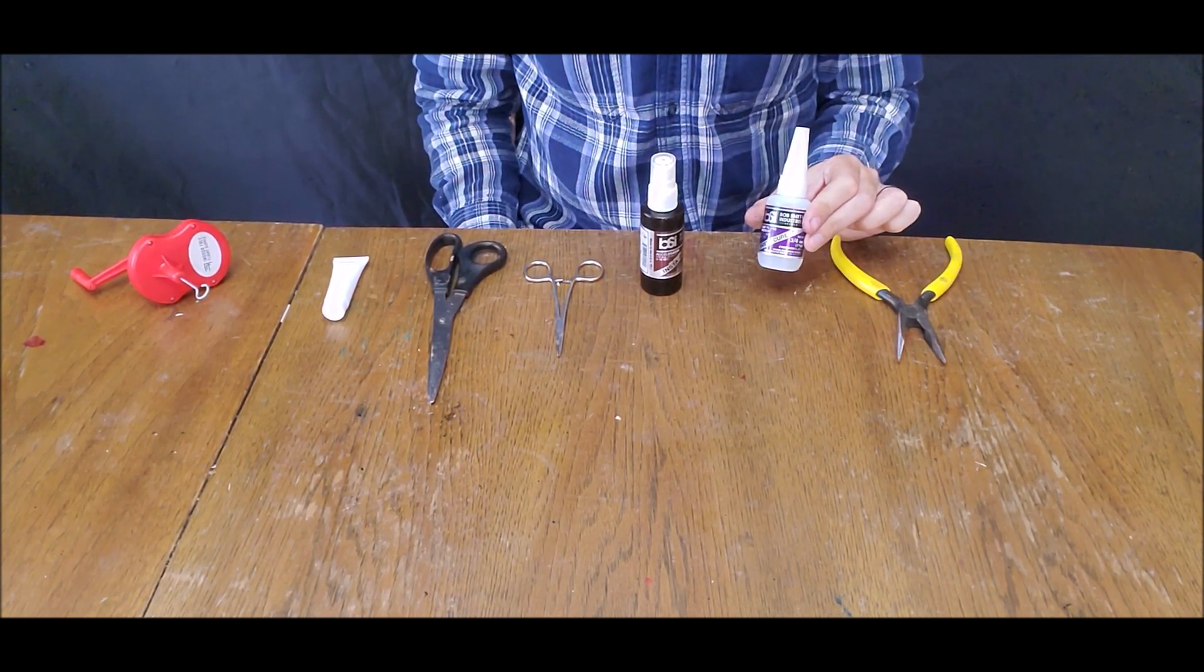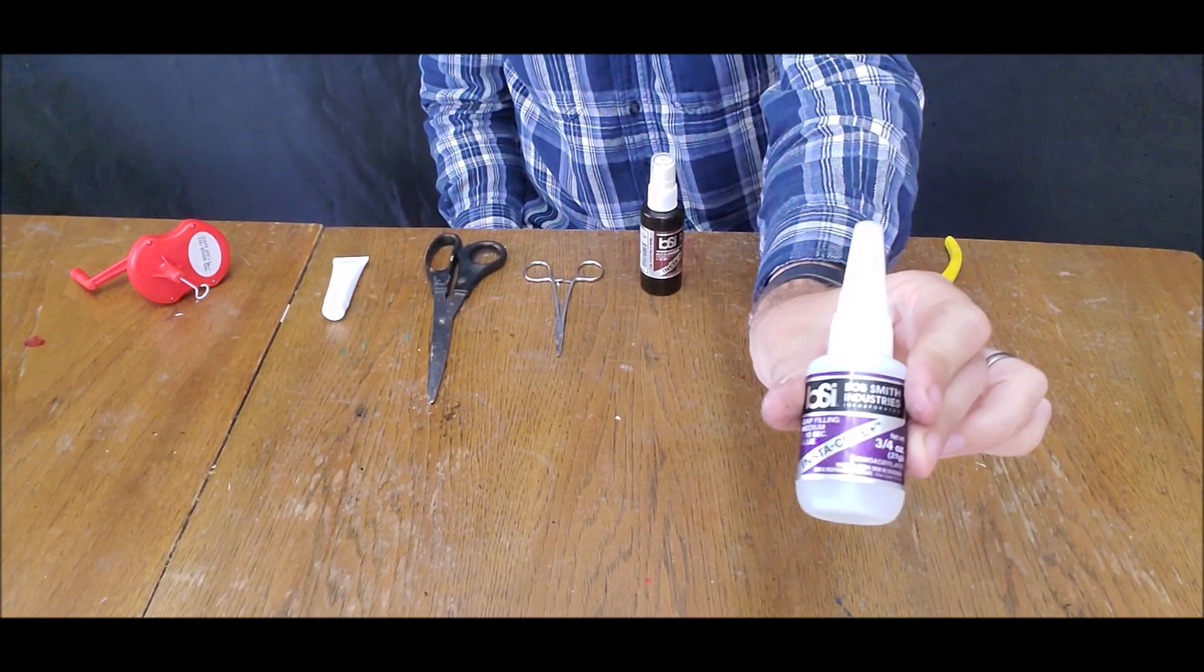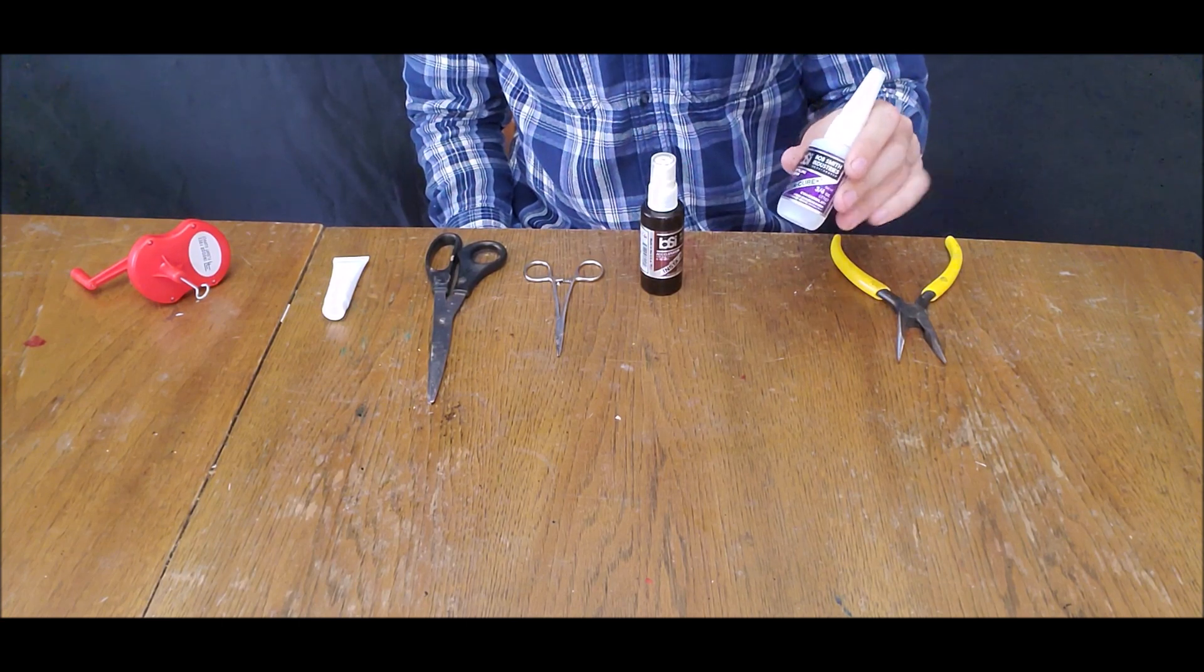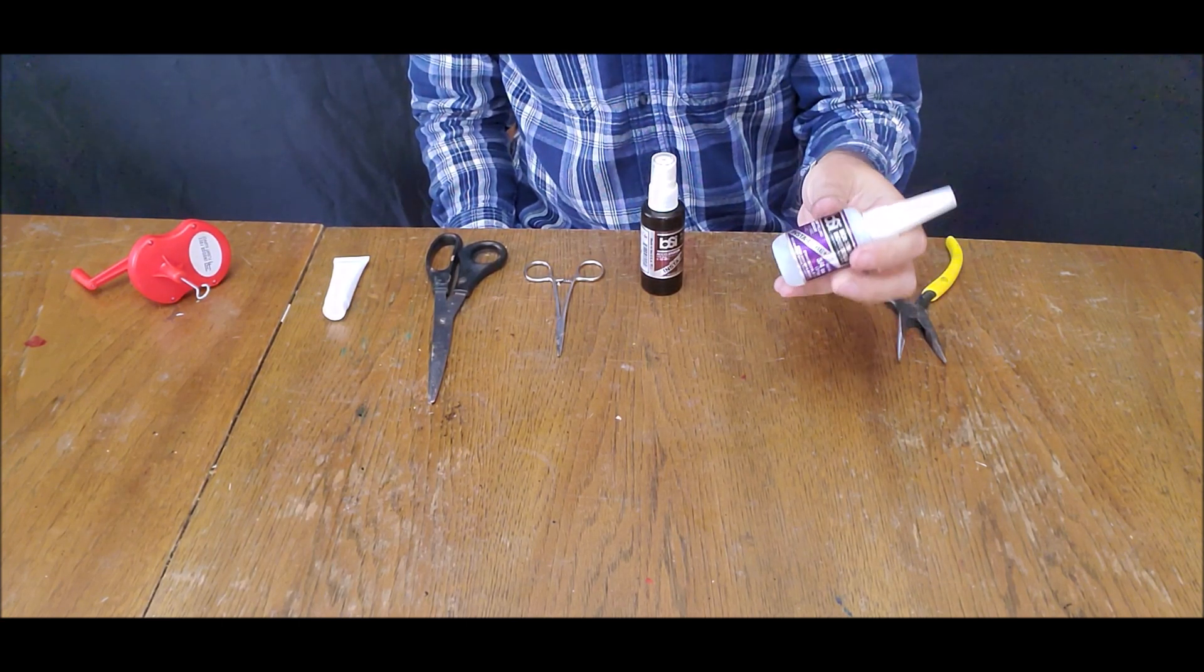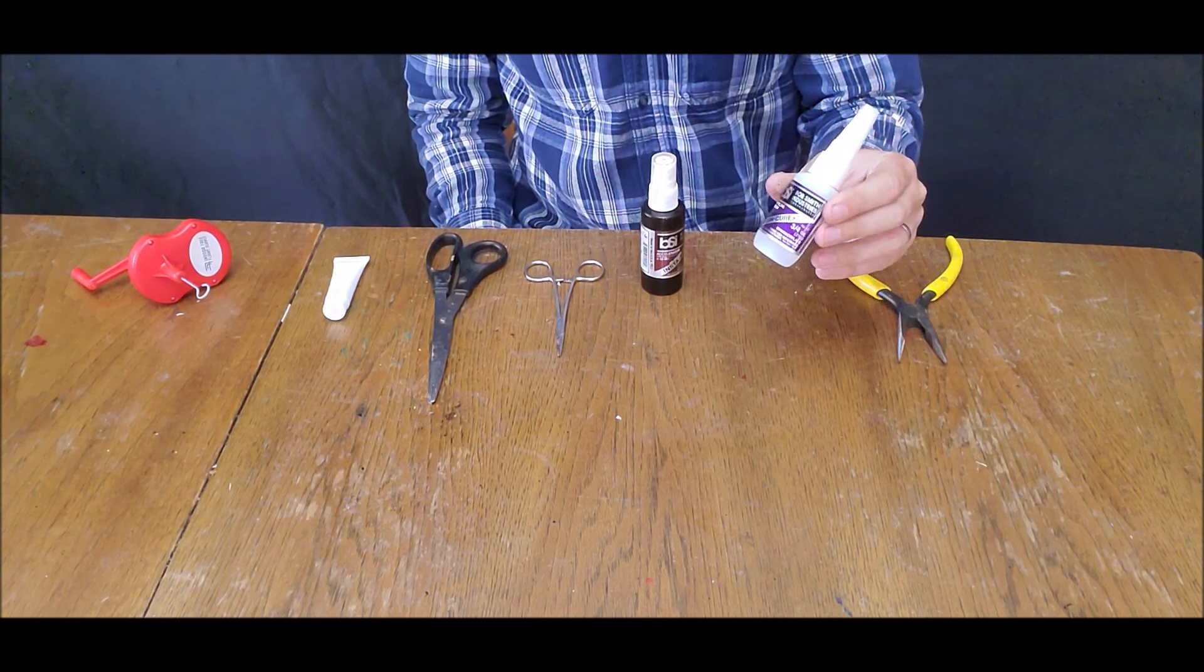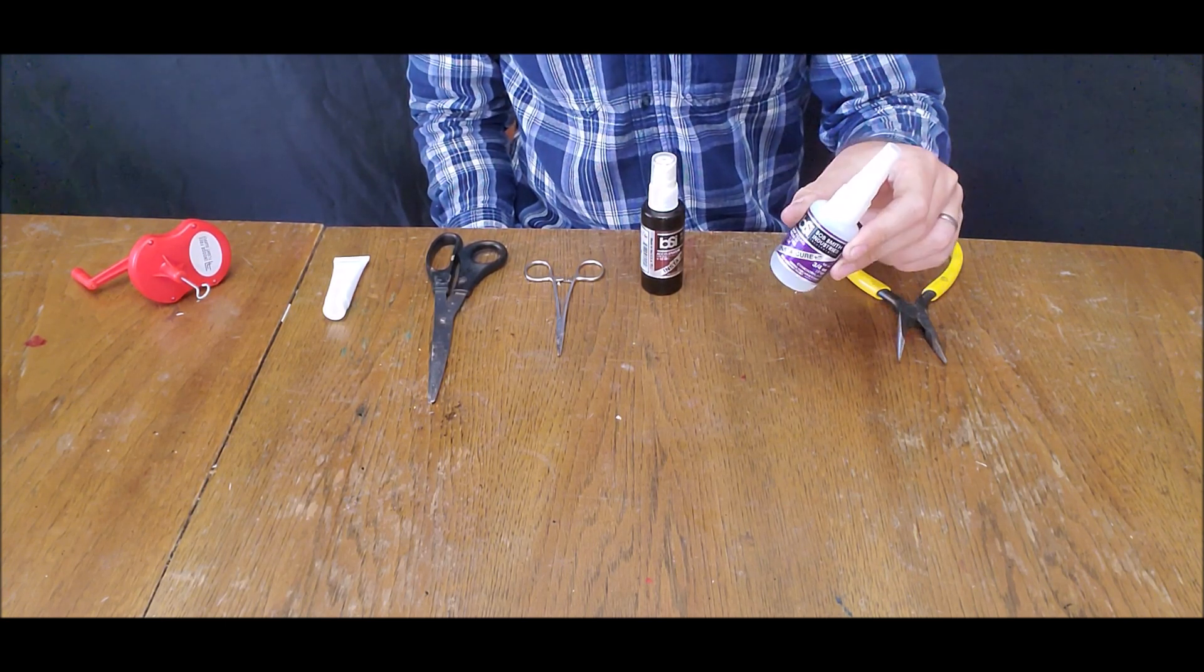A good quality bottle of super glue. This is Bob Smith medium CA. We do not recommend thin CA, but medium CA works well. You can get Bob Smith, mercury adhesive, satellite city, or Gorilla CA if you can get it in bottles like this.